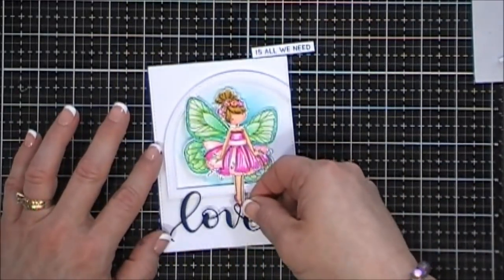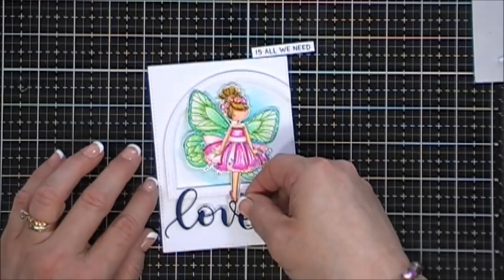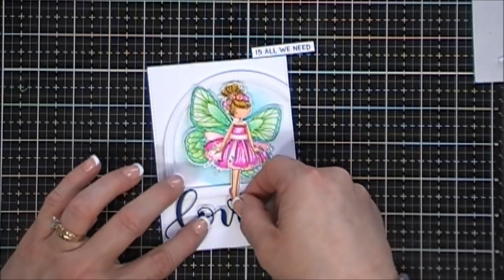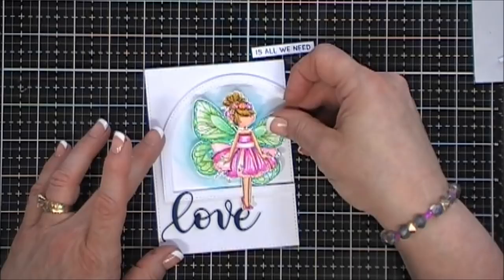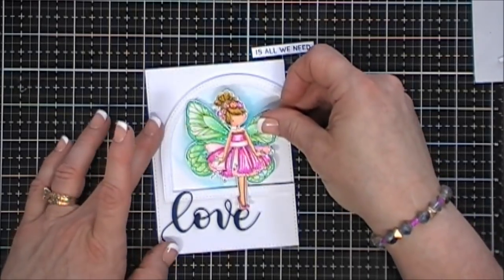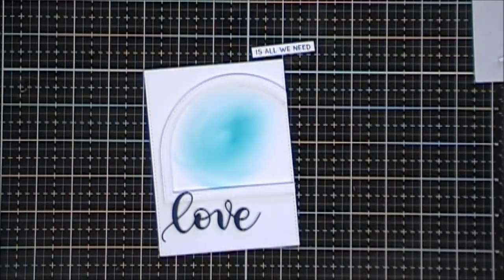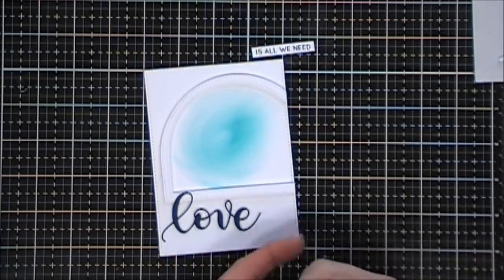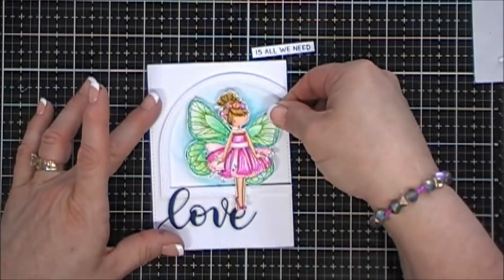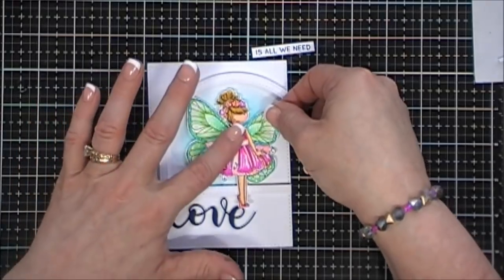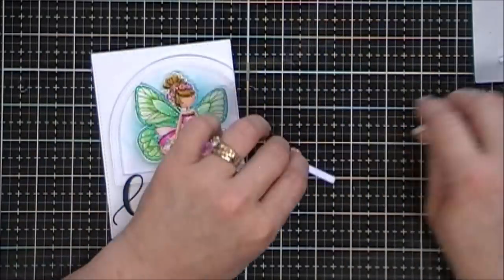I'm just going to place that on my panel right below the dome. I'm going to add some foam tape behind Blanche and then we're going to secure her to the panel as well. I love all the sparkle that she has.